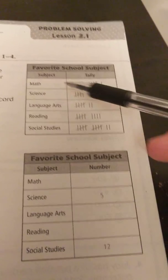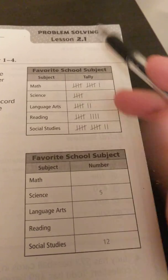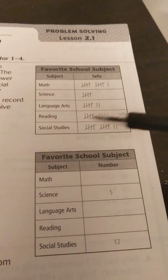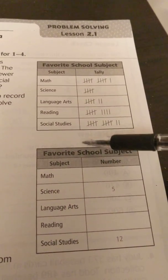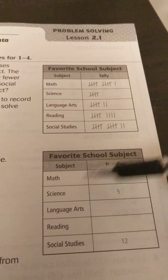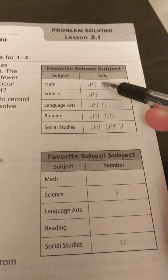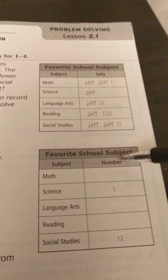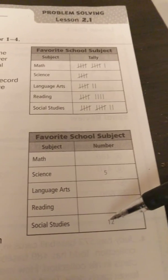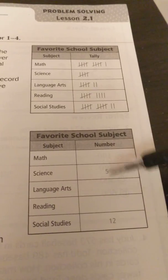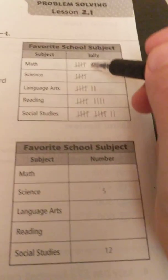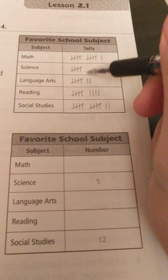At the top we have a favorite school subject table, and at the bottom we have another table also called favorite school subject. Everything is the same about these except one is counting tallies and the other has numbers. Two of them have already been filled in, so we're just going to go ahead and fill the rest in.